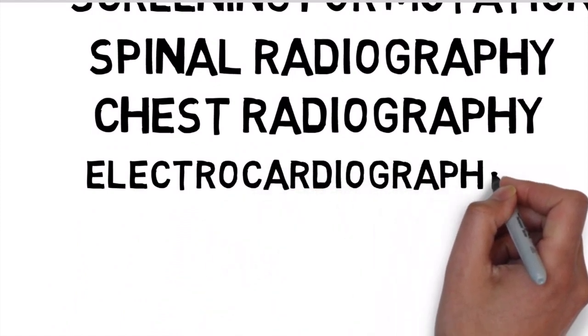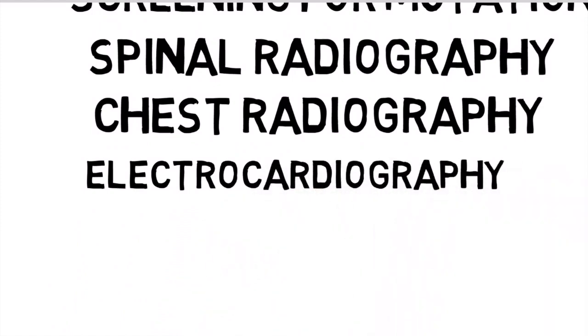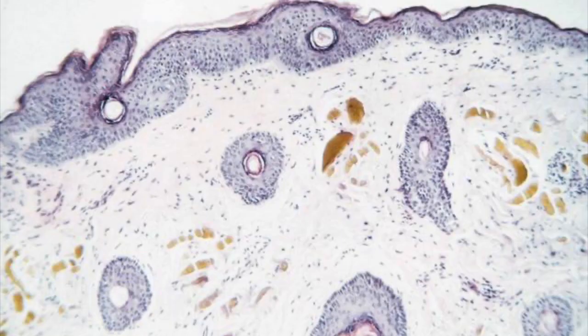Electrocardiography may be advisable with attention directed at any signs of myocardial insufficiency. On histopathology, ochronotic pigment is seen in sections of the dermis stained with H&E stain and this pigment is yellowish-brown or ochre in color — hence the name ochronosis.